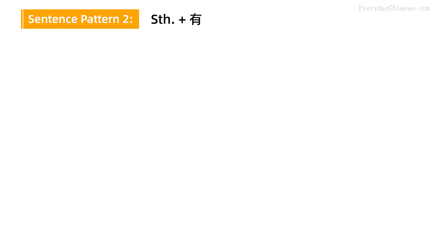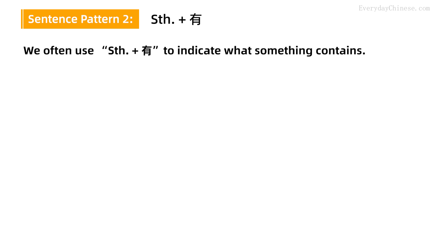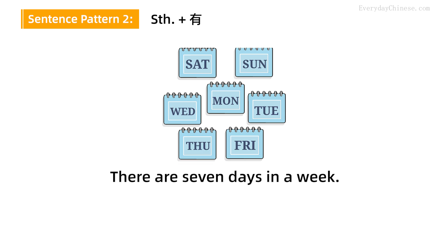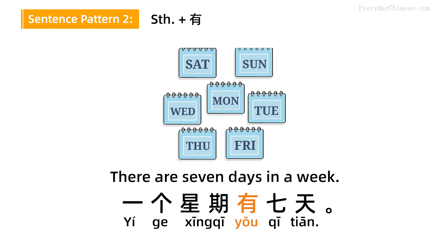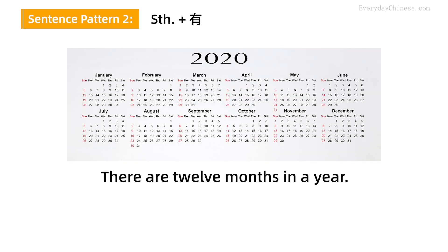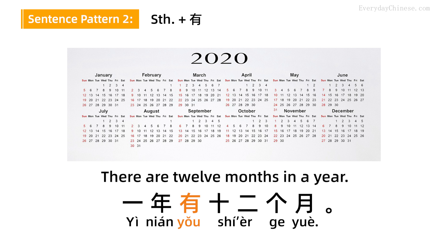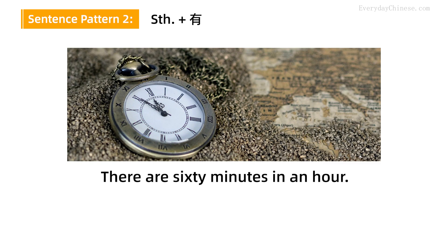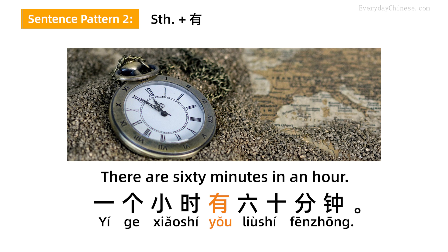Sentence pattern 2: Something有. We often use Something有 to indicate what something contains. For instance: There are seven days in a week — 一个星期有七天. There are twelve months in a year — 一年有十二个月. There are sixty minutes in an hour — 一个小时有六十分钟.